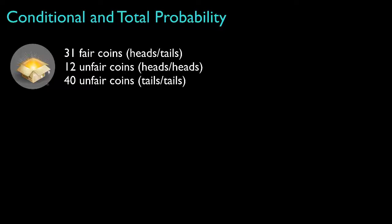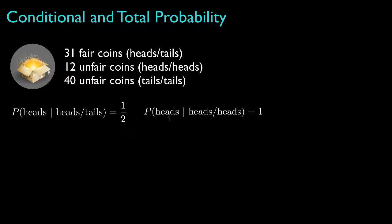As an example, suppose we have a box containing 31 fair coins (heads on one side, tails on the other), 12 unfair coins with heads on both sides, and 40 coins with tails on both sides. We select a coin at random, flip it, and want to find the probability of seeing heads. Conditional on drawing the fair coin, P(heads) = 1/2. Conditional on the two-headed coin, P(heads) = 1. Conditional on the two-tailed coin, P(heads) = 0.